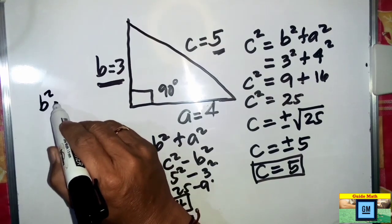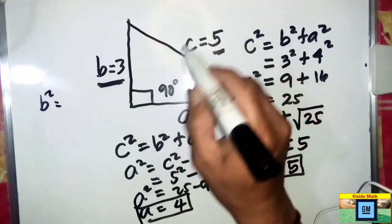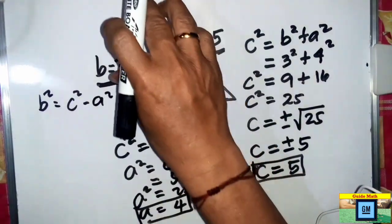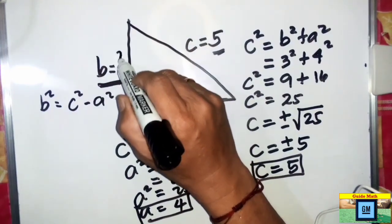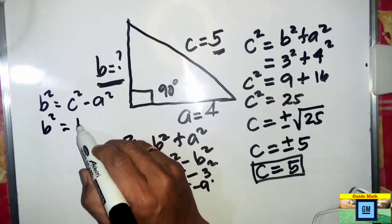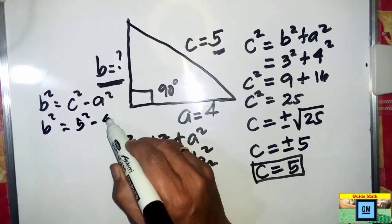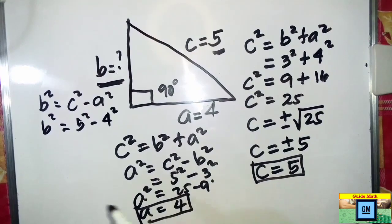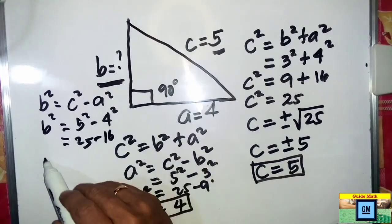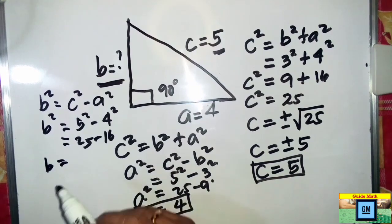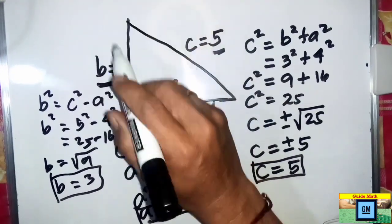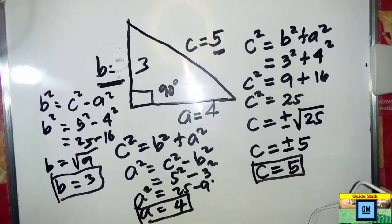The same is true when solving for B. B squared equals C squared minus A squared — we always subtract from the hypotenuse, the longest side. Suppose we don't know that B is 3: substituting, B squared equals 5 squared minus 4 squared equals 25 minus 16 equals 9. Therefore B equals the square root of 9, which equals 3. So B equals 3.